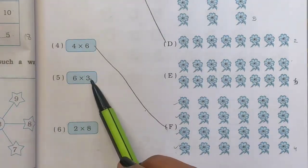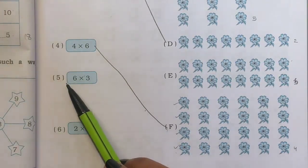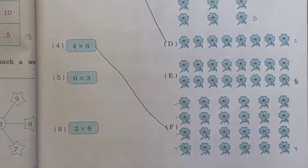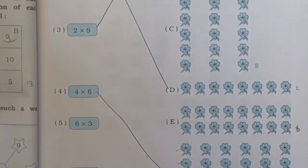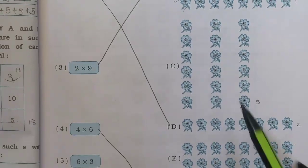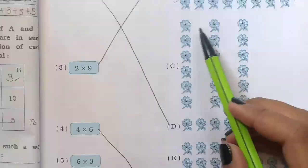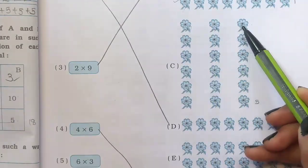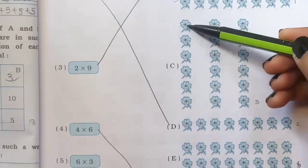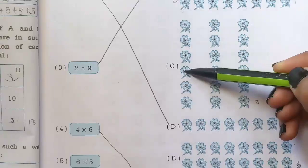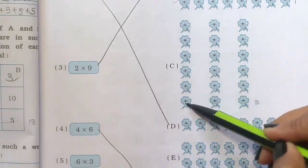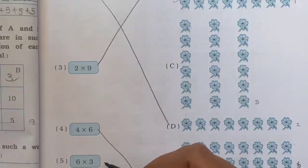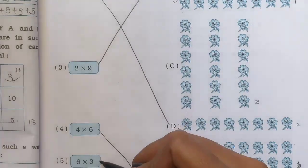Number 5 is 6 multiplied by 3, meaning 6 times 3. We find the picture where there are 3 objects and 6 times: counting 1, 2, 3 — that is 3 — and how many times: 1, 2, 3, 4, 5, 6 times. So we match it with F.